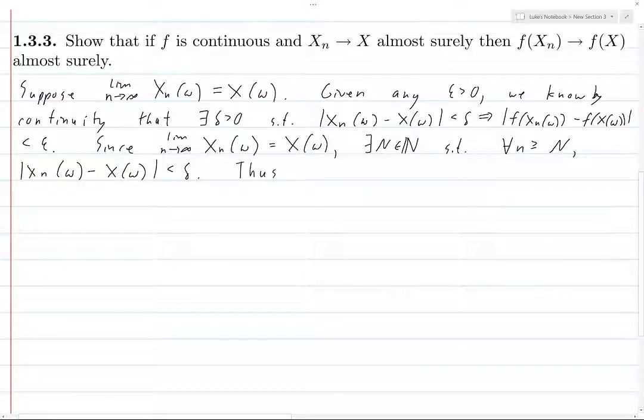Thus, the limit as n goes to infinity of f of x_n of omega equals f of x of omega. Because what it means for this limit to exist, it means that given any epsilon greater than zero, we need to find some N, capital N, such that for any lowercase n greater than or equal to capital N, the distance between f of x_n of omega and f of x of omega must be less than epsilon.